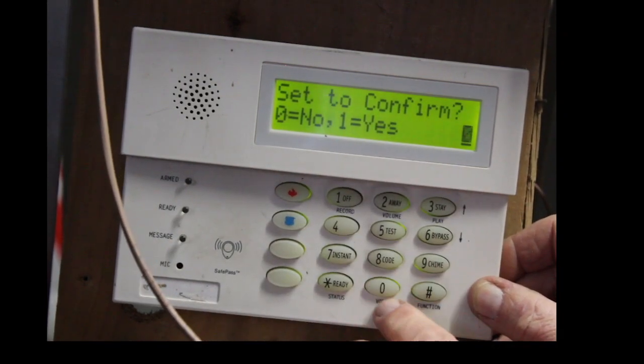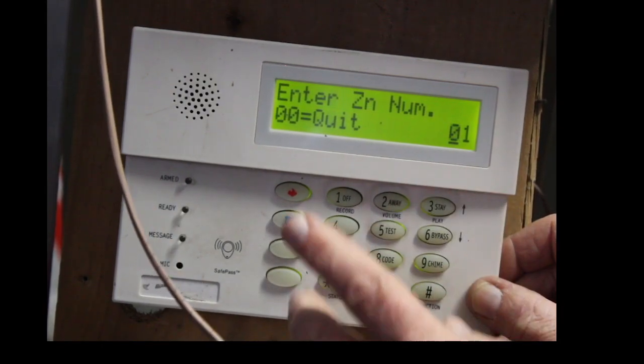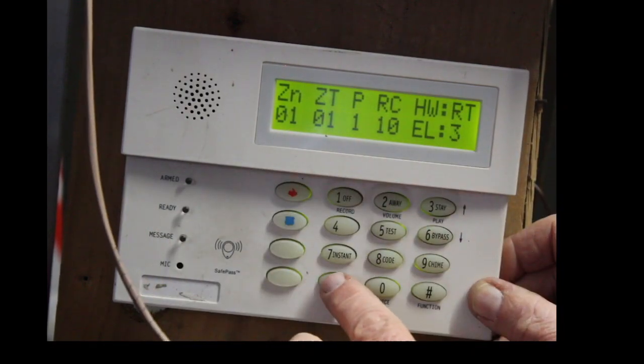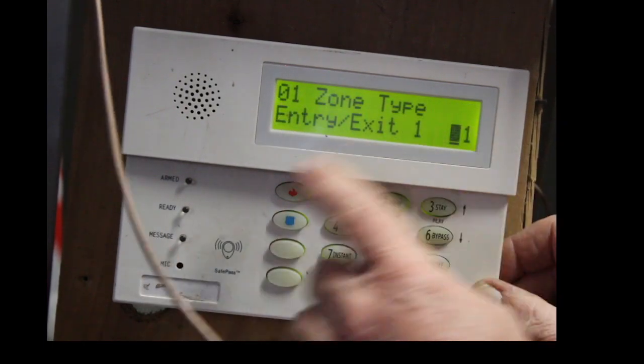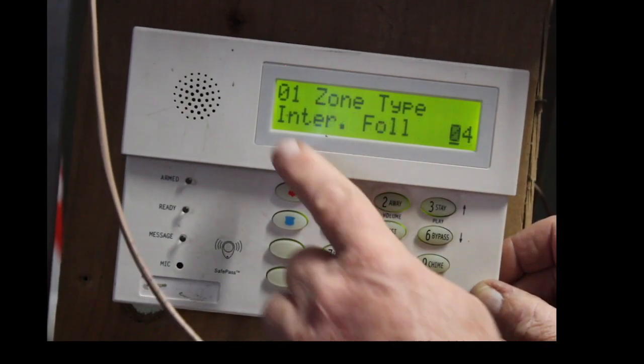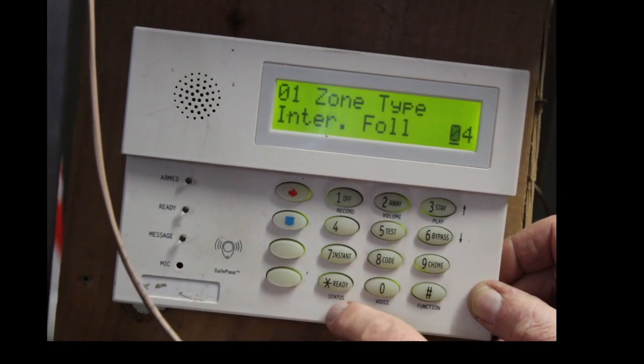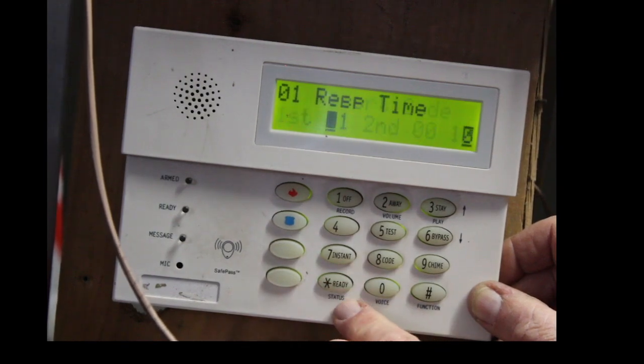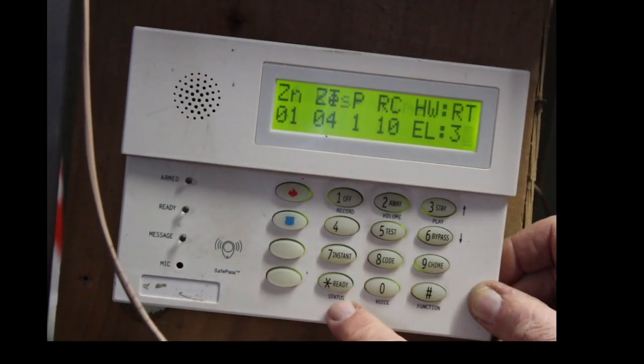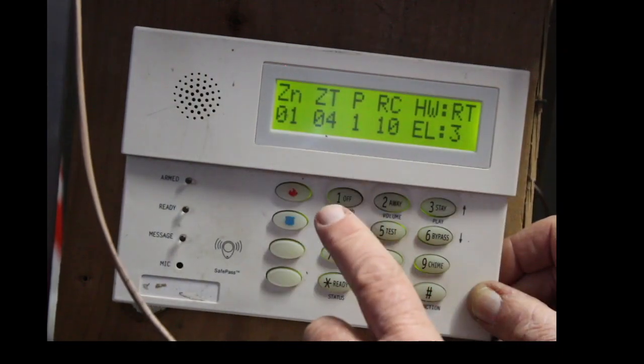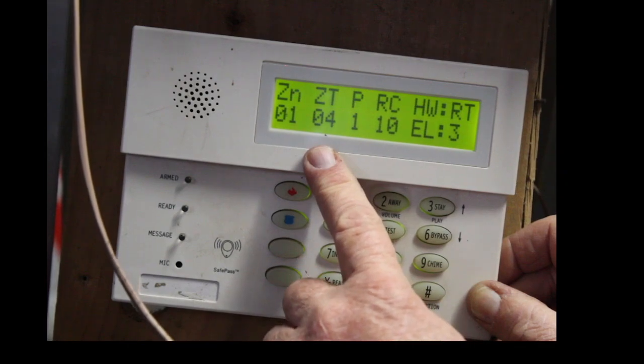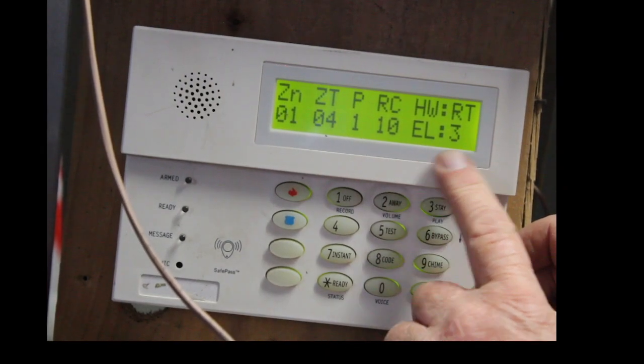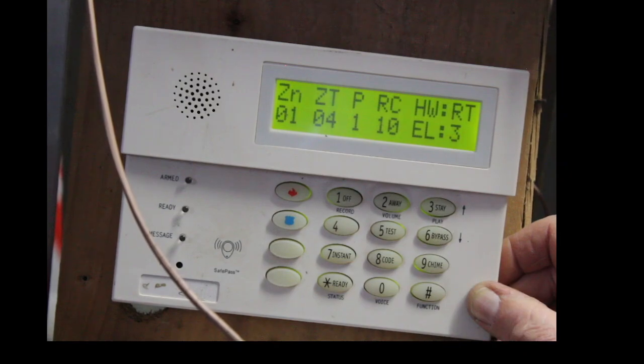Set to confirm. Just say no. So, 0. Enter the zone number. We use 01. That's the zone we're using. So, just hit star. This just tells you what's in there right now. Just go by it. Enter the zone type, which is an 04, which is an interior follower. That's what you want for a motion detector. Star. Petition 1. Leave that alone. This is the report code. Leave that alone. This just gives you an overview of how you program the zone, which is zone 1. It's a zone type 04. It's on partition 1. The report code is 10. And the end of line is 3, meaning that it's a hardwire end of line resistor.